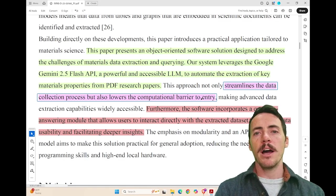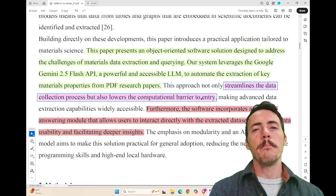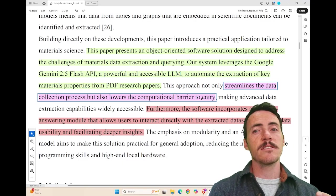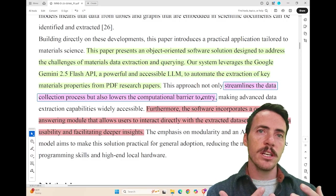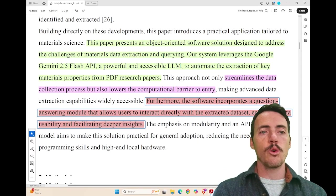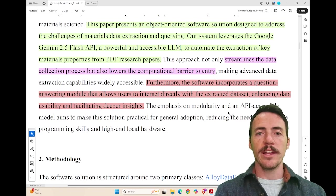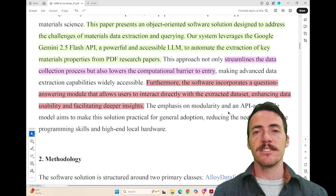They're going to combine the large language models that have been used in literature, things like Gemini 2.5 Flash. They're going to combine it with object-oriented software design to come up with a system that can do not only data extraction, but also querying. So it says here the software incorporates a question and answer module that lets users interact with the data directly to get deeper insights. Let's check it out.